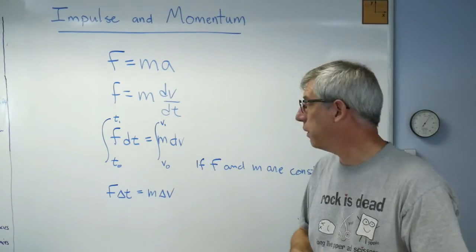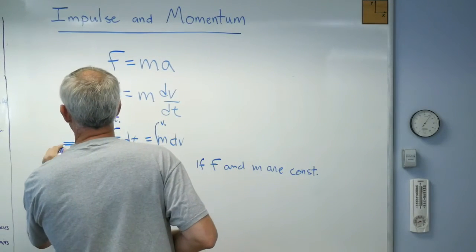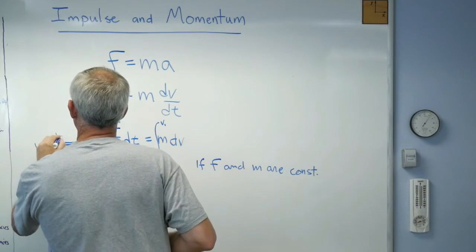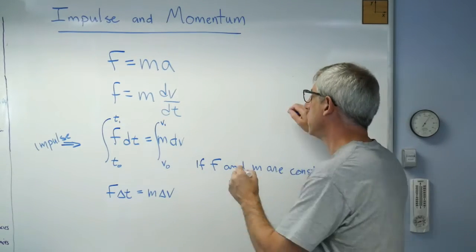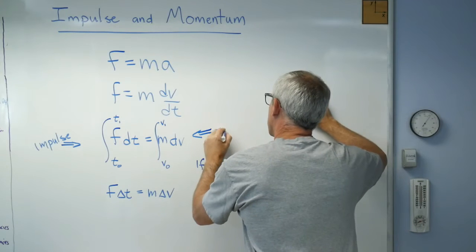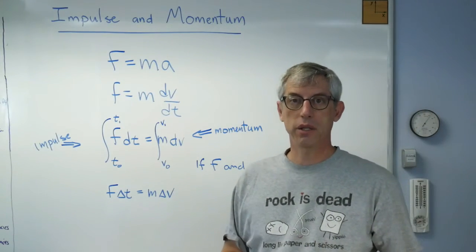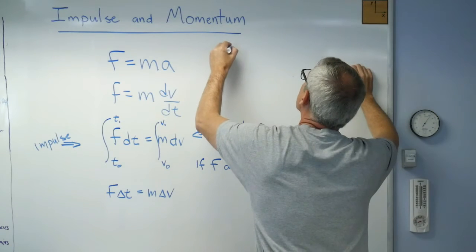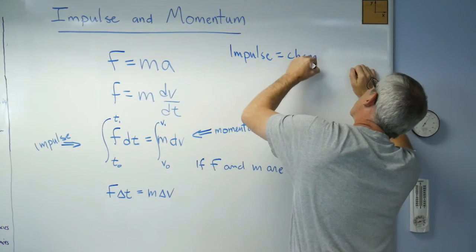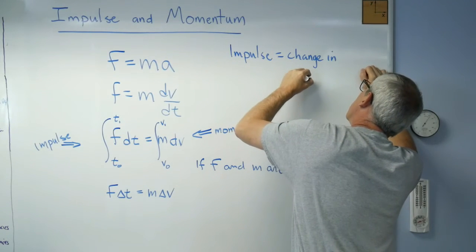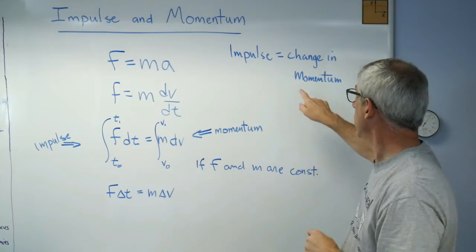Now, the left side of this equation, whether you look at it there or there, that's impulse. That's just a function or a property that's defined. That's called impulse, and this is momentum. Impulse equals change in momentum. Sometimes people actually write that out on their paper, almost in words. I actually used to write that down on test papers and things, just so I wouldn't forget.